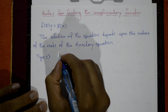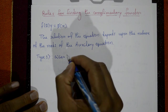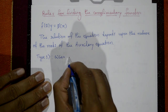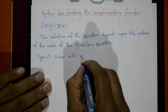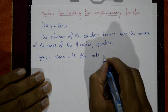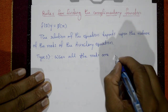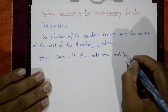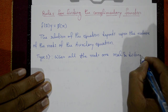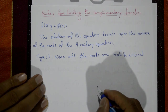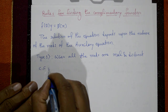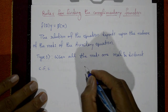Type 1: when all the roots are real and distinct. The complementary function solution is formed when all roots are different.